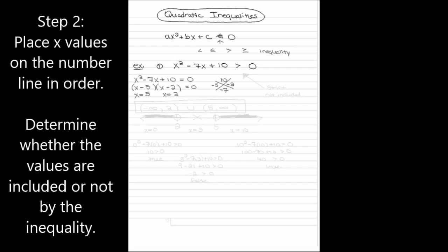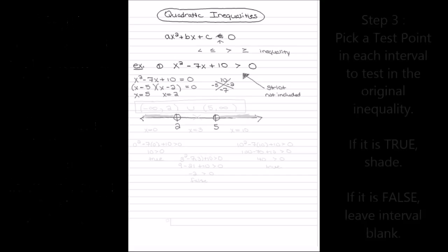The next step is to put these two numbers on a number line. I'm going to draw a number line across my paper and put 2 and 5 in order. I need to make a determination whether these values are going to be included or not. This inequality is strict — it doesn't say equal to, there's no bar underneath the inequality — so I'm putting open circles at each one of my numbers.